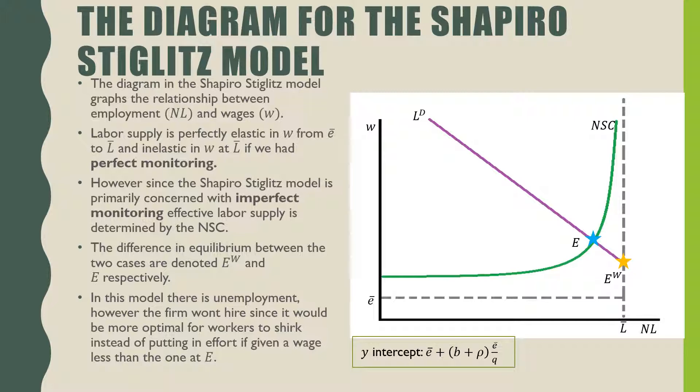In this model there is unemployment when compared to the neoclassical model. However, a firm won't hire more than that because if they hire more the wage is low and workers will shirk. So they're only going to demand enough labor at point E and not EW, which would be the case of perfect monitoring.